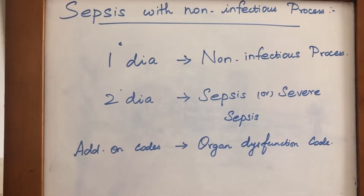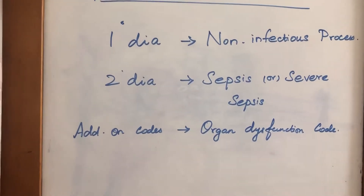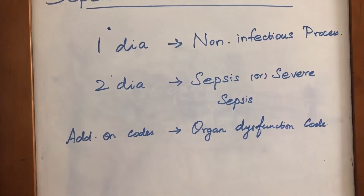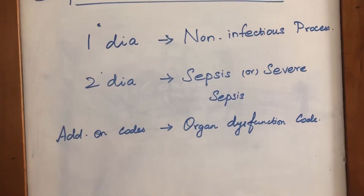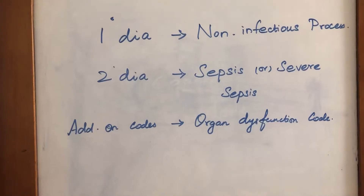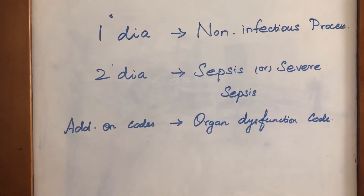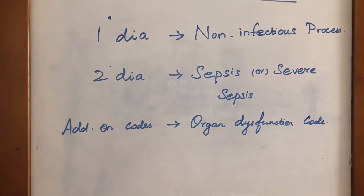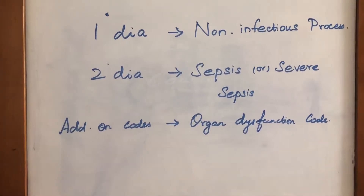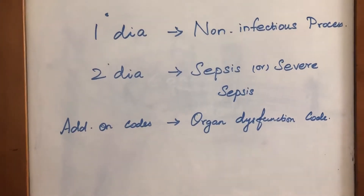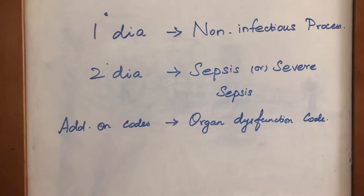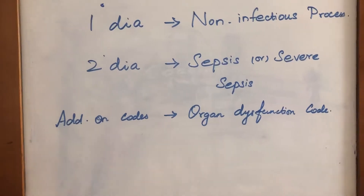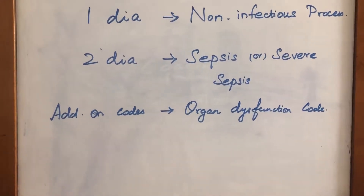That means Sepsis that does not come from infection but from a disease or condition. For example, a non-infectious process includes a burn from a fire accident — burns that occur normally in daily life — and trauma, such as an accidental injury or a fall.